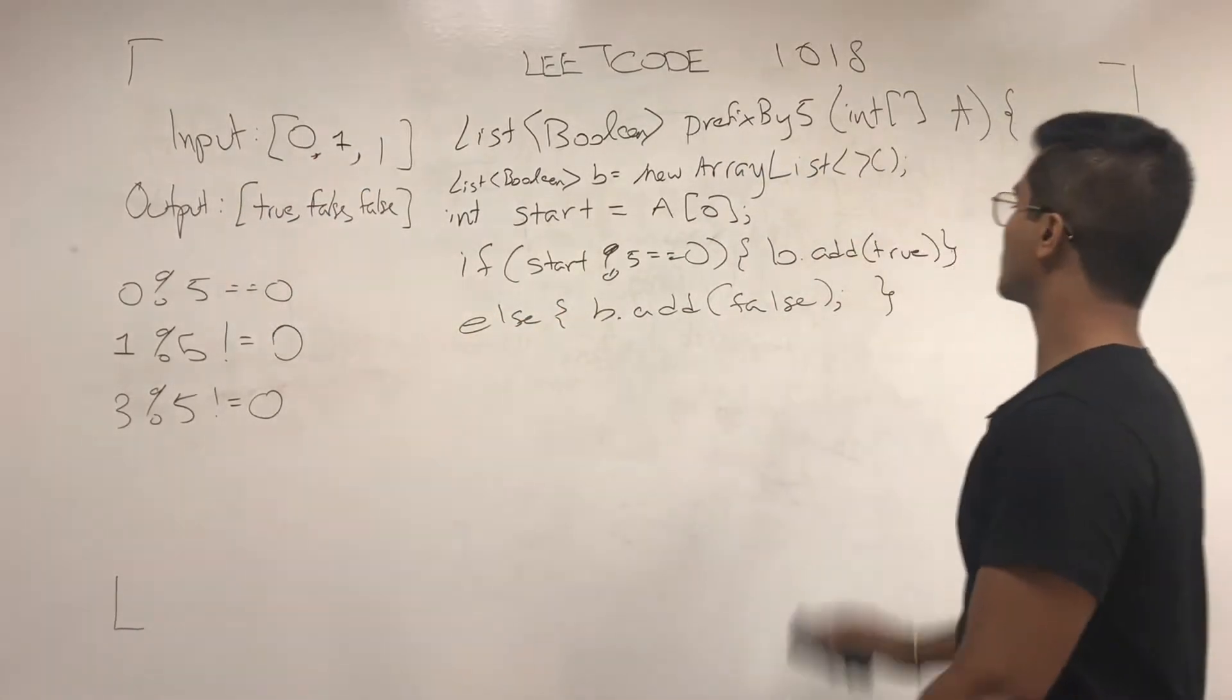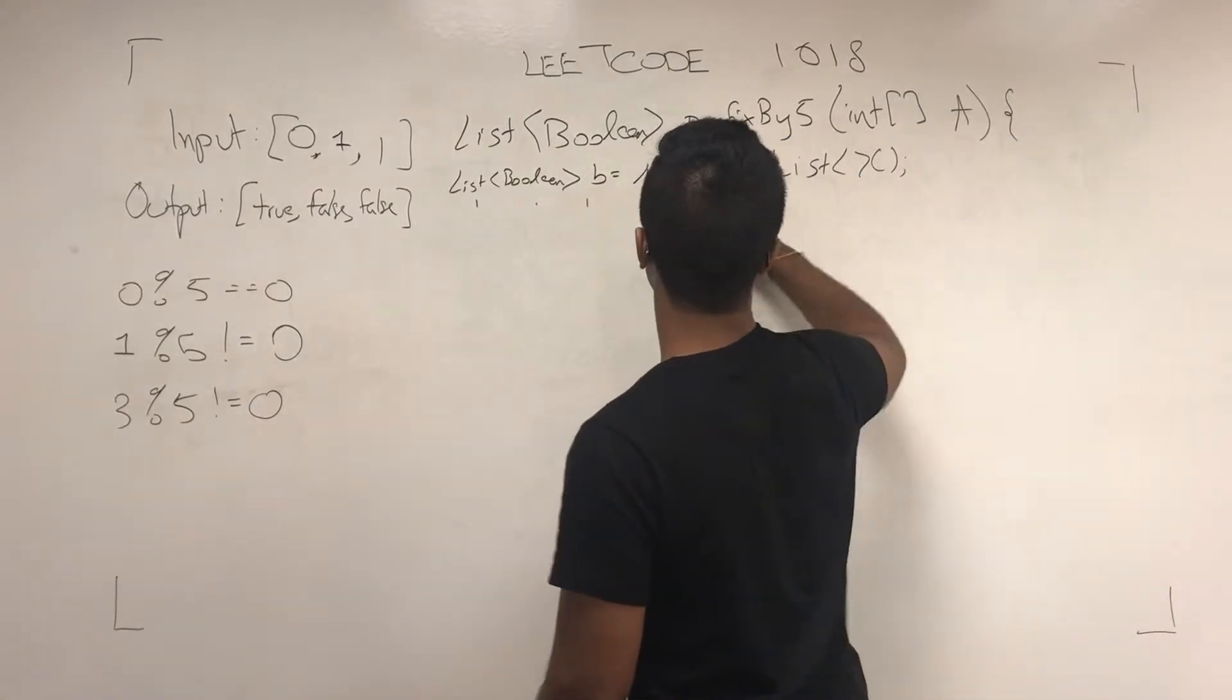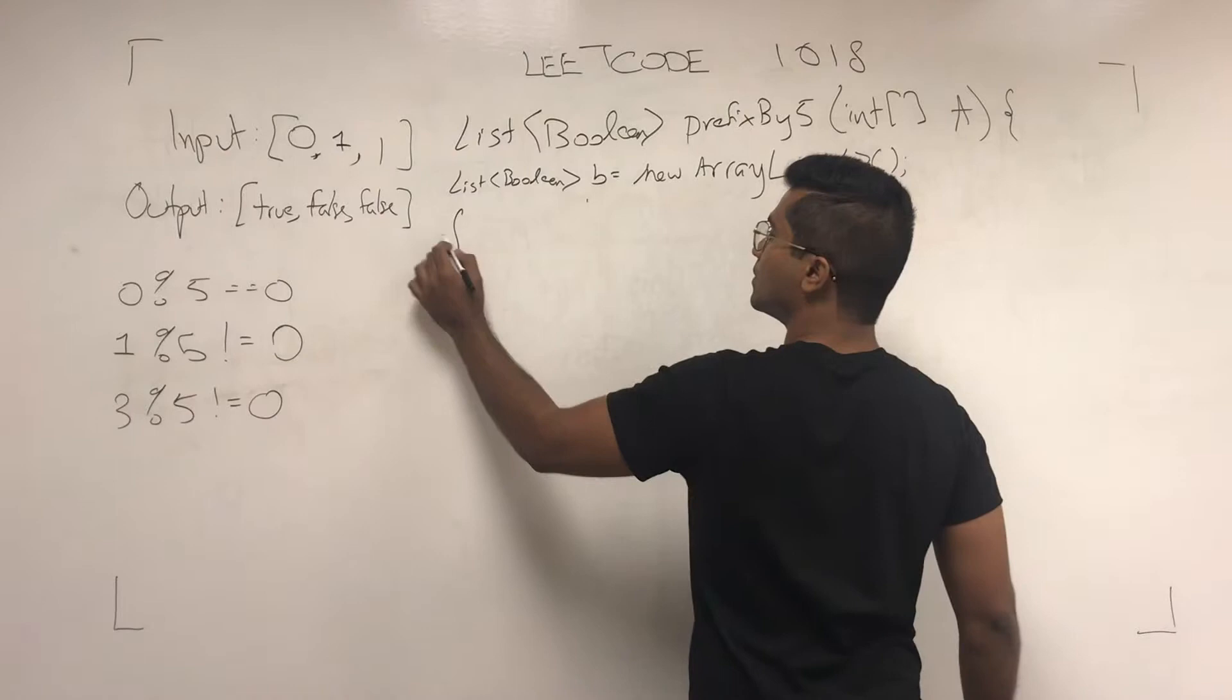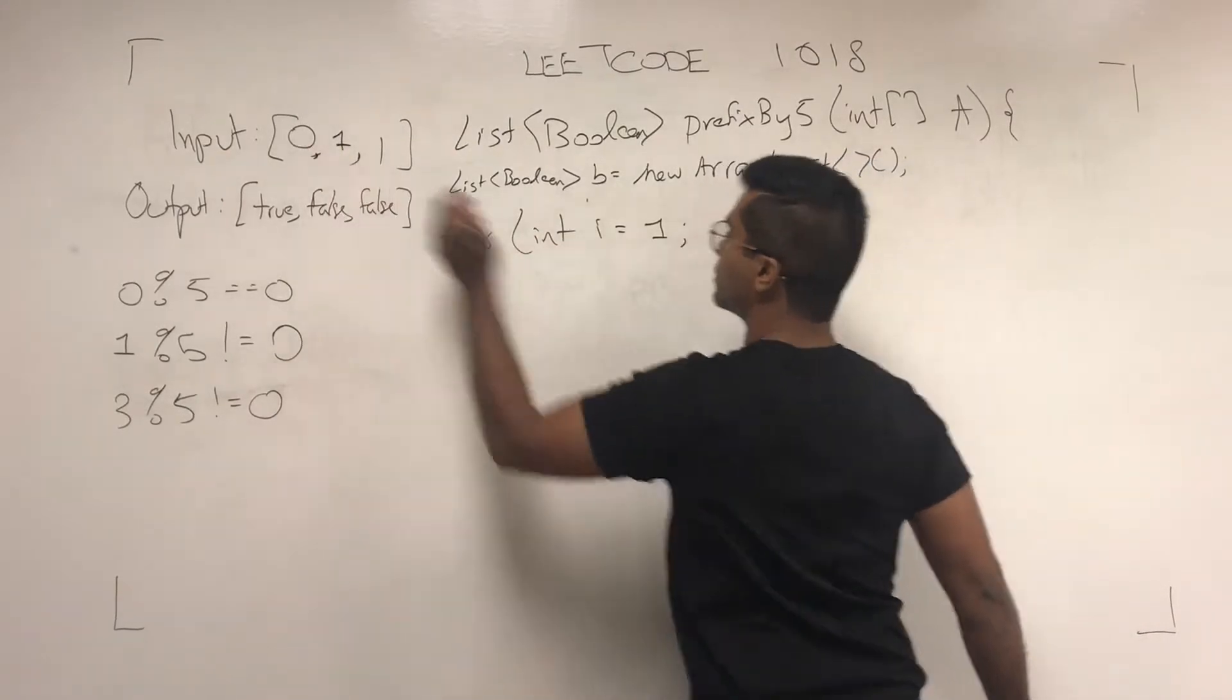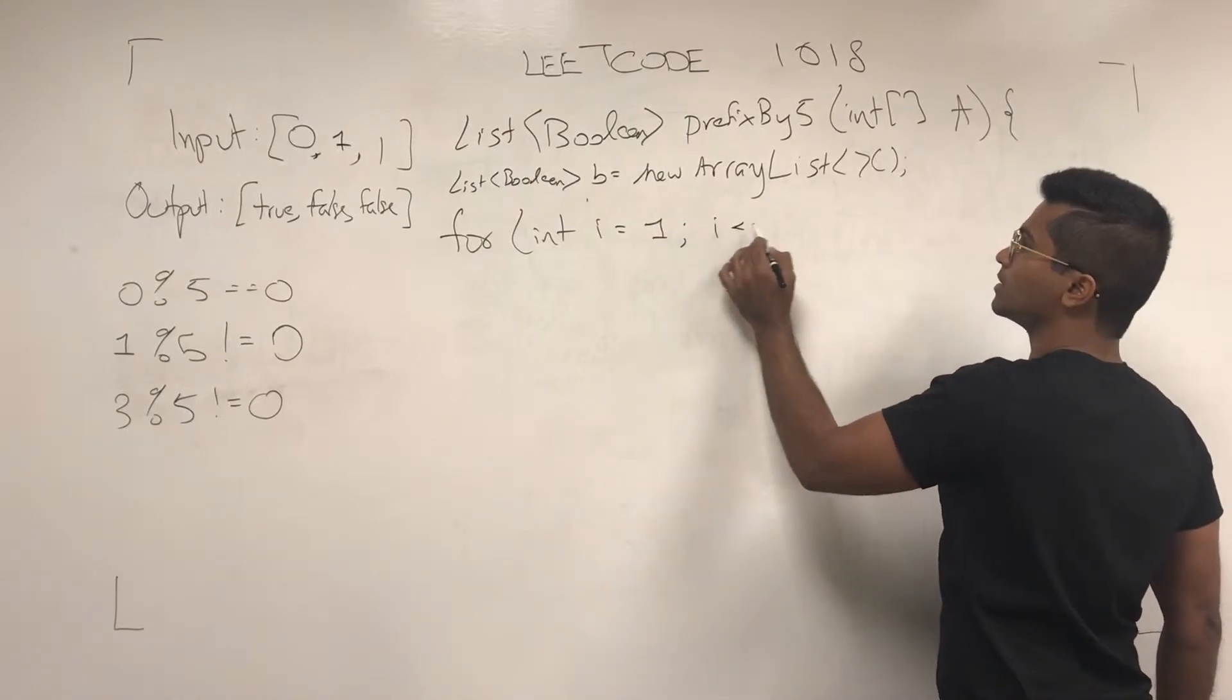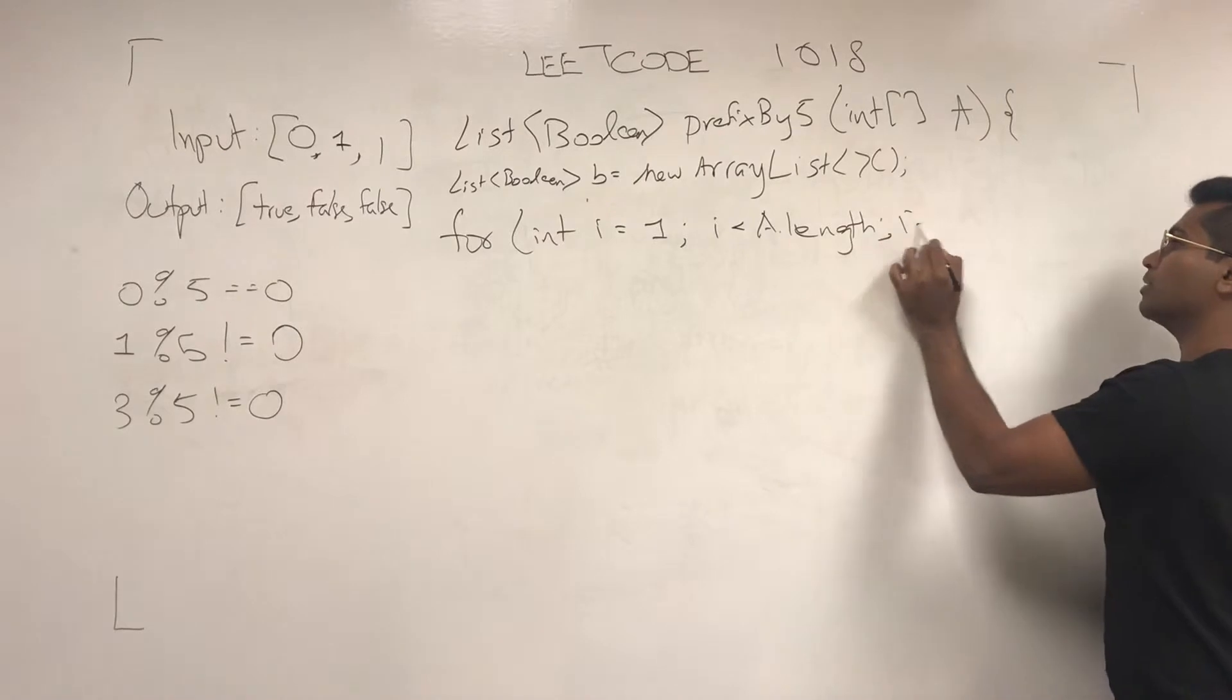For int i equals 1, because we already started the first, we're going to do i is less than a.length, i plus plus,